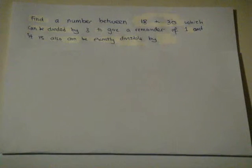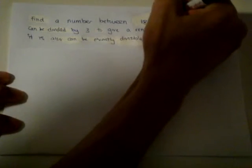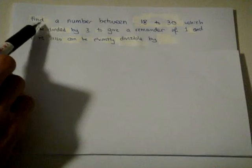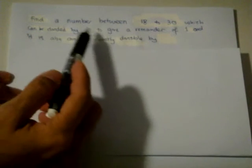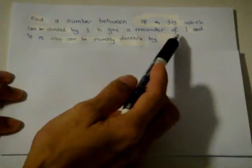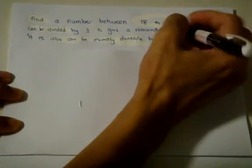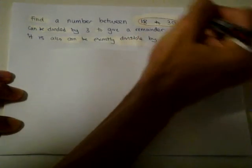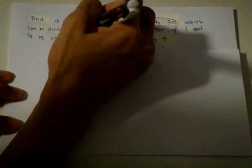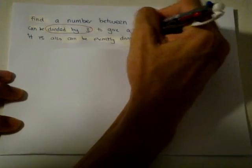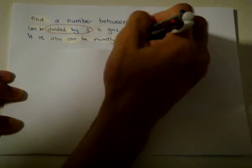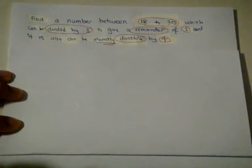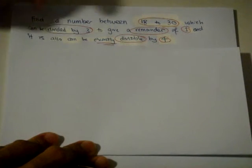First, how do you know whether a question requires guess and check? Let me show you. The problem asks: Find a number between 18 and 30 which can be divided by 3 to give a remainder of 1 and is also exactly divisible by 4. After you have read it, circle the keywords: divided by 3 with remainder of 1, and exactly divisible by 4.